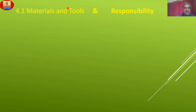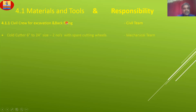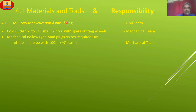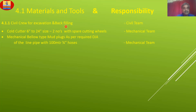Material and tools responsibility: Civil crew for excavation and backfill. Cold cutter sizes 6 inches to 24 inches, two numbers with spare cuttings by mechanical team — depends on size you have to arrange. Mechanical below type — Mudflex — as per required diameter of the line pipe, with a 3/4 inch process connection. Once you insert the mechanical below at the end, connect a 3/4 inch pipe and keep it far away — 100 meters — because while welding, fumes or gases may catch fire due to fumes and heat. To prevent that, you should have a 3/4 inch hose for 100 meters.